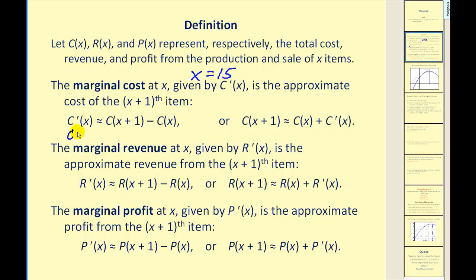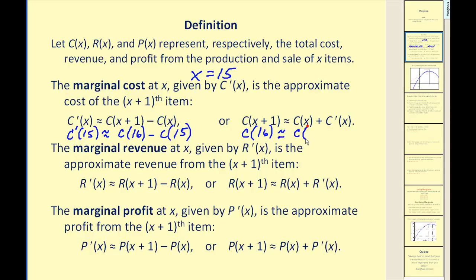If we find the marginal cost function, or the derivative, and evaluate this at 15, this is going to be the approximate total cost of 16 items minus the total cost of 15 items. We could also say that the total cost of x plus 1, or 16 items, would be approximately equal to the total cost of 15 items plus the marginal cost at x equals 15.